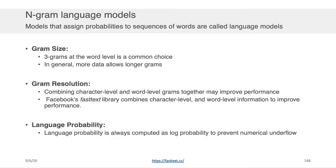Another important thing you'll notice when reading textbooks or papers that use n-gram models: when they speak about language probability, there's always a log wrapped around that probability structure. They use a sum instead of a product. There's nothing magical about that log — it's there just to prevent numerical underflow, because probabilities, if you multiply a large number of them together, get very small very quickly to a point that you can't represent them easily within a computer.